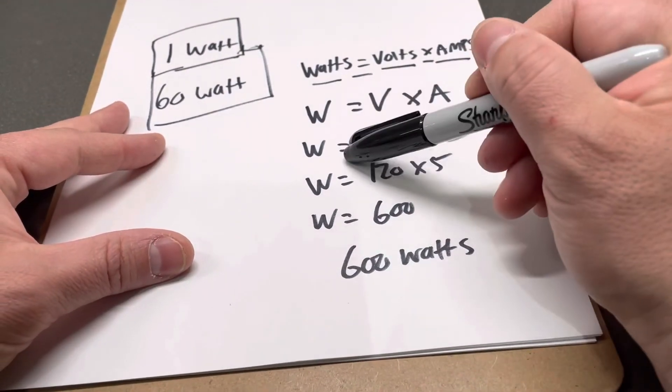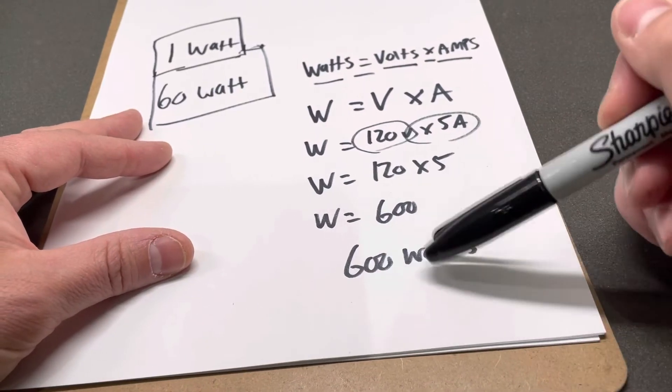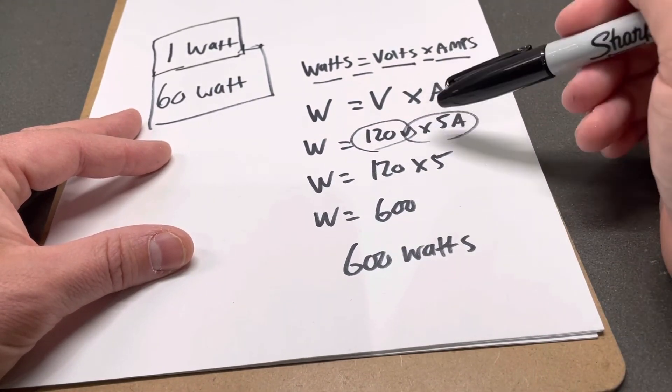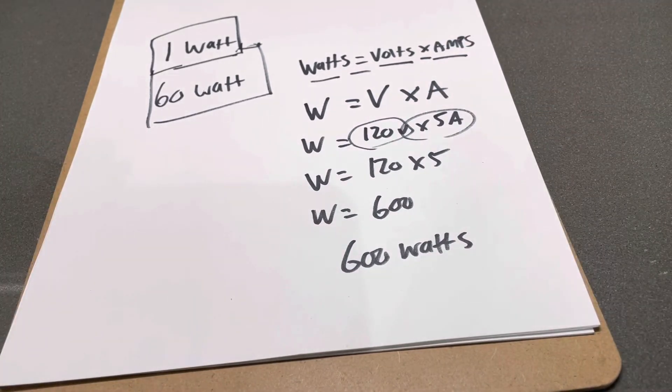If I knew it had 600 watts and 120 volts, I could do 600 watts divided by 120 volts because it's the opposite operation, and that would give me 5 amps. Very simple. That's how it's done.